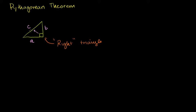It's important to keep track of which side is which. The Pythagorean theorem tells us that if and only if this is a right triangle, then a squared plus b squared is going to be equal to c squared.